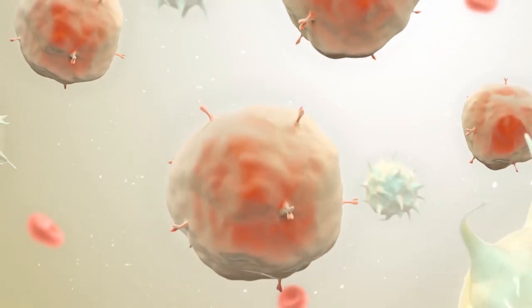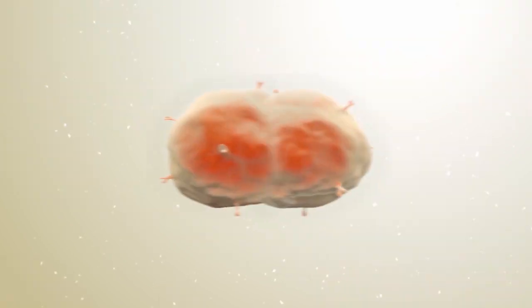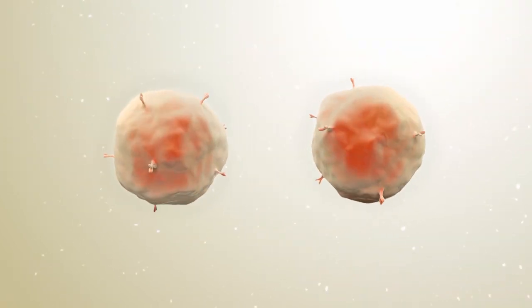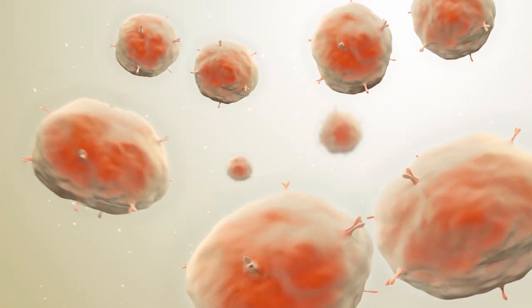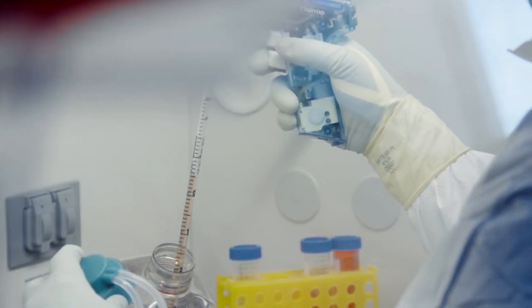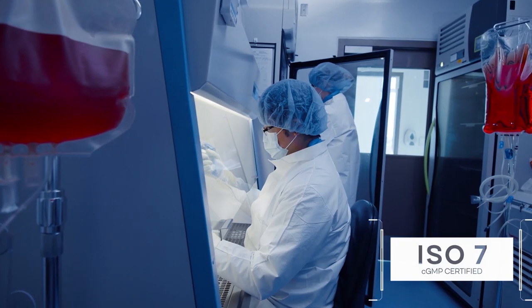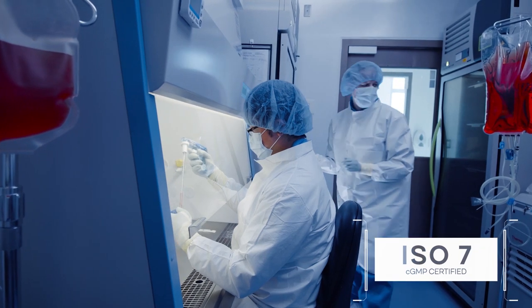During the manufacturing process, Moffitt scientists use a variety of molecular methods to boost the fighting power and specificity of the patient's collected T-cells. Millions of these modified cells are grown by scientists in 10 on-site ISO-7 CGMP certified clean rooms.